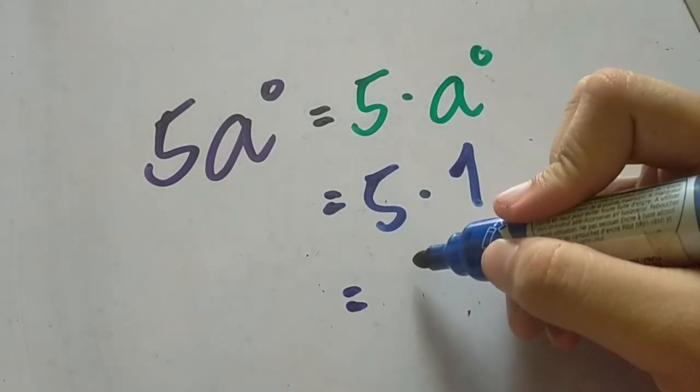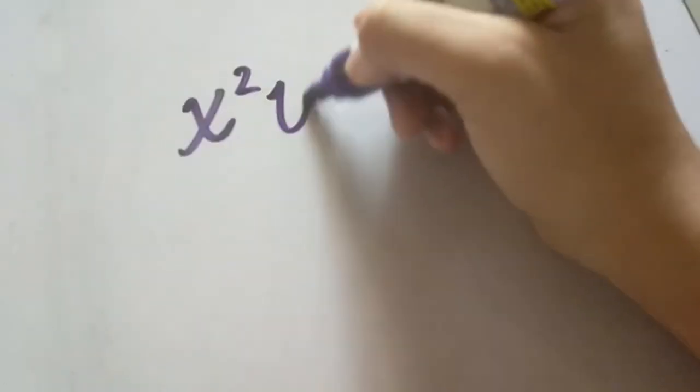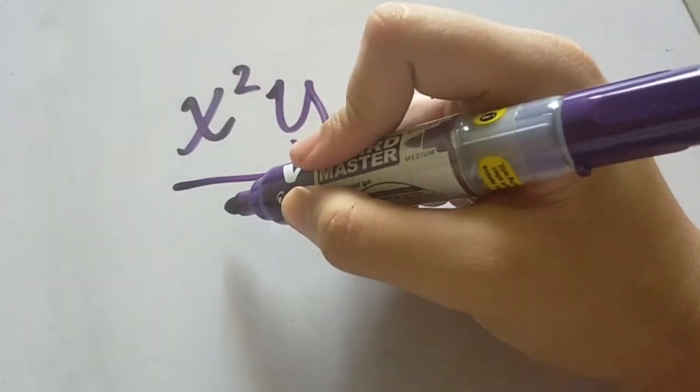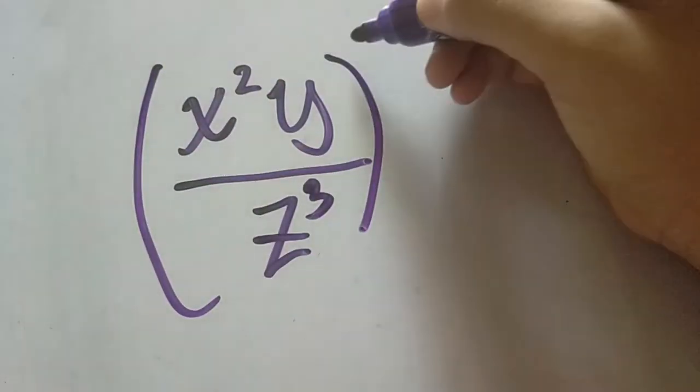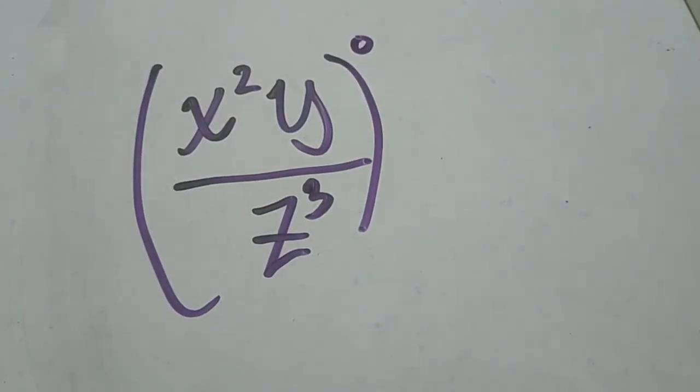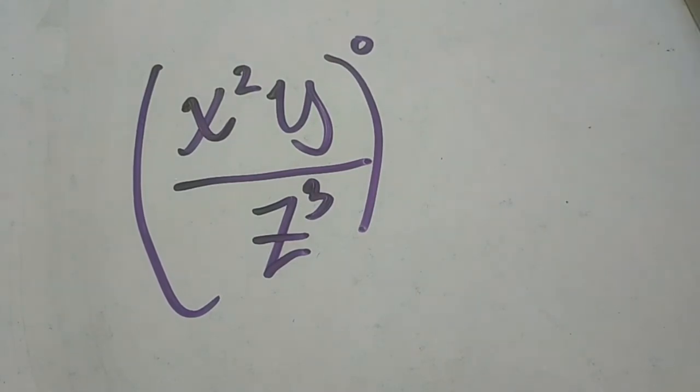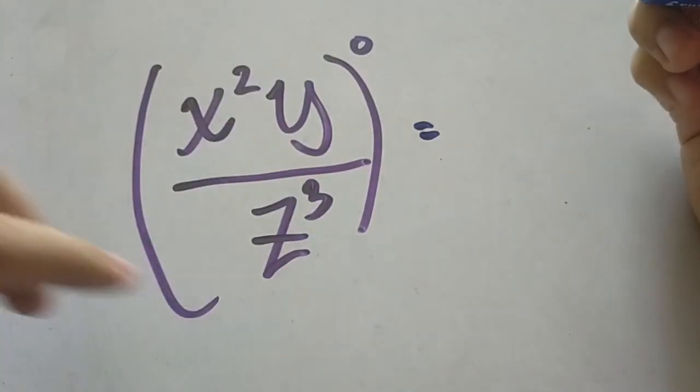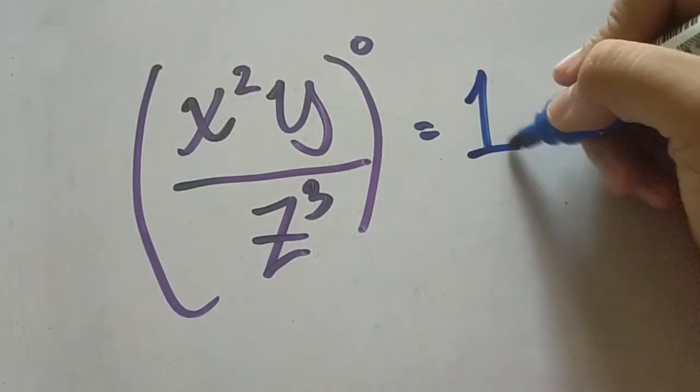For example, we have x squared y over z raised to 3, and this whole group is raised to 0. So since this whole group is raised to 0, we can just simply equate it to our answer. A number or a group being raised to 0 is always equal to 1.